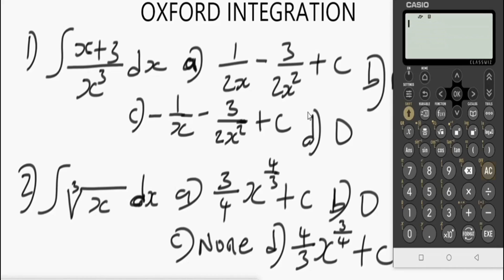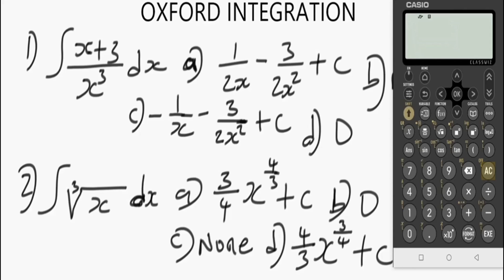The next thing we are going to do is store a value we will use to solve these problems. I highly recommend using x = 2 when solving calculus problems, whether integration or differentiation. To store on this calculator, press the variable button, navigate to x, press 2, then press execute. This indicates that 2 has been stored as x on the calculator. Press AC to go back.